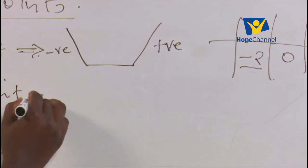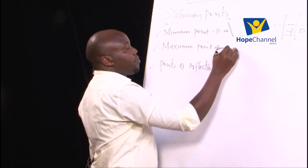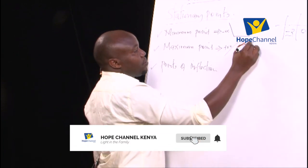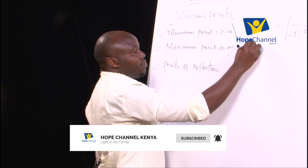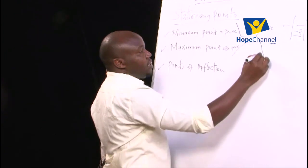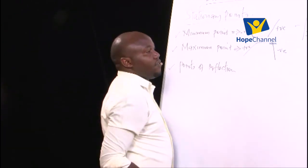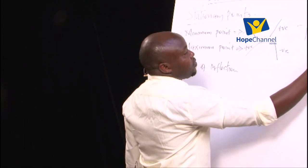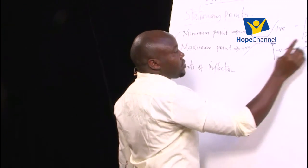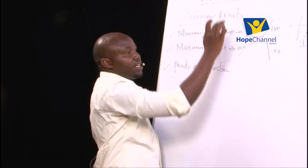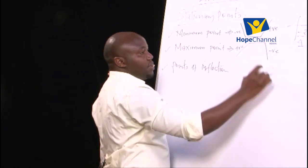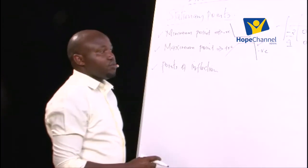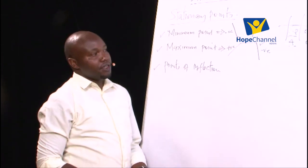For a maximum point, the gradient function moves from positive, to zero at the stationary point, then becomes negative. For example: positive 4, zero, negative 2. You move toward the positive side, go to zero, then come to the negative point — this qualifies as a maximum point.